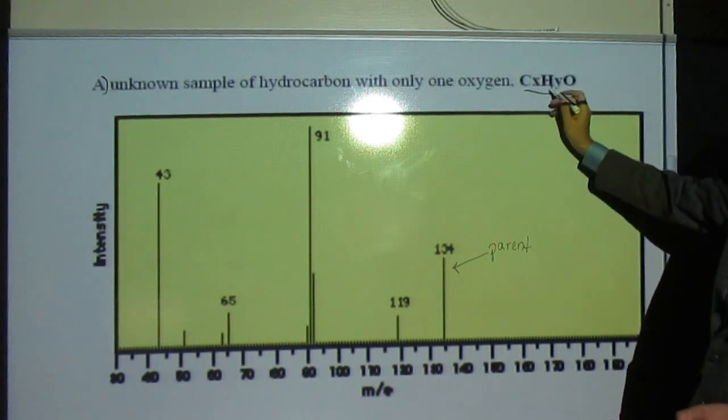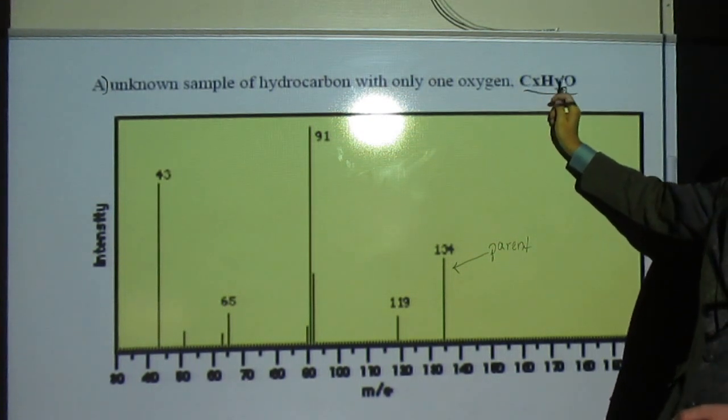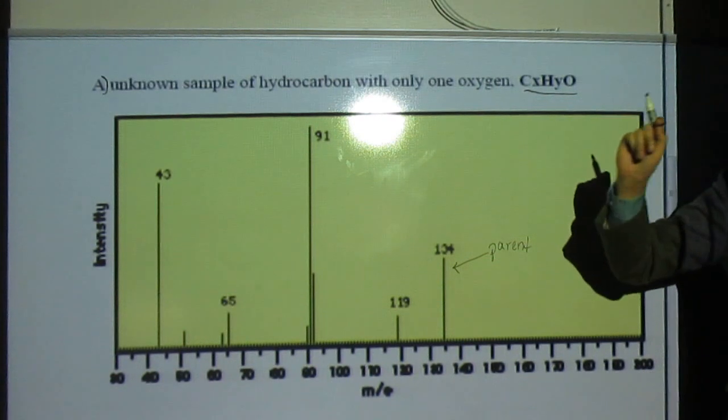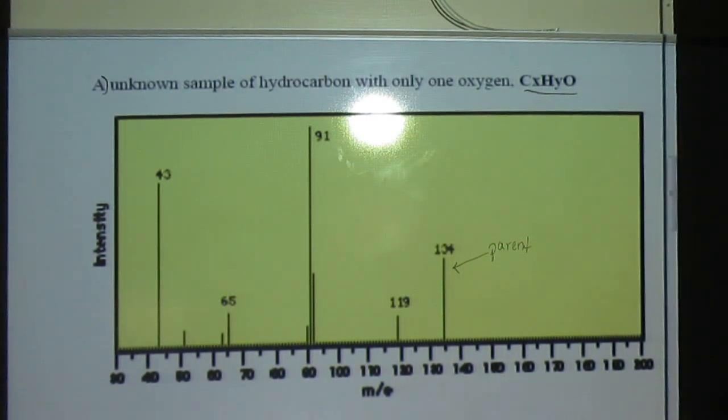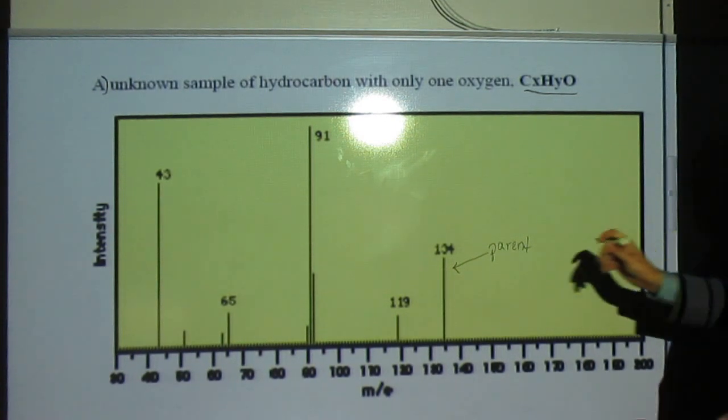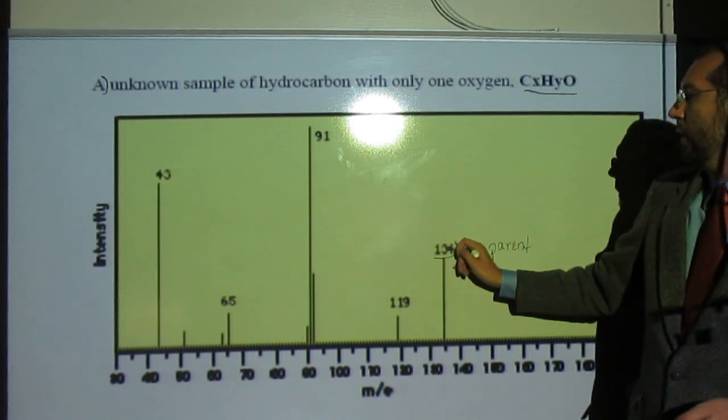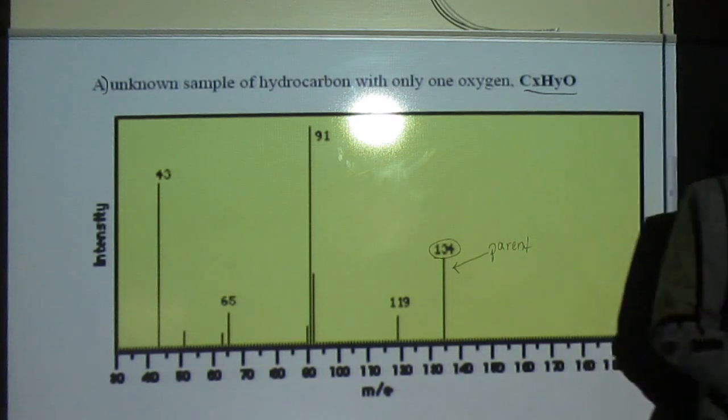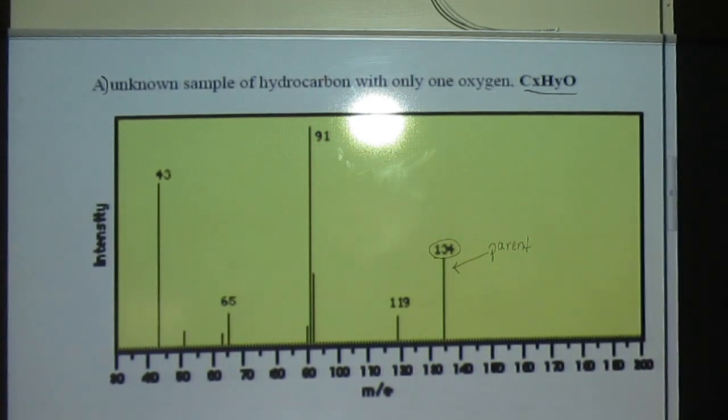Right? If we have only atoms that are C, H, and O, the compound has to have what type of mass? An even number of mass, right? It's only going to have an odd number if it has a nitrogen in it. So that gives you another clue as to, oh yeah, that's the parent ion. In fact, if I look at all the other ones, they're all odd, right? So you can logically think this stuff out.